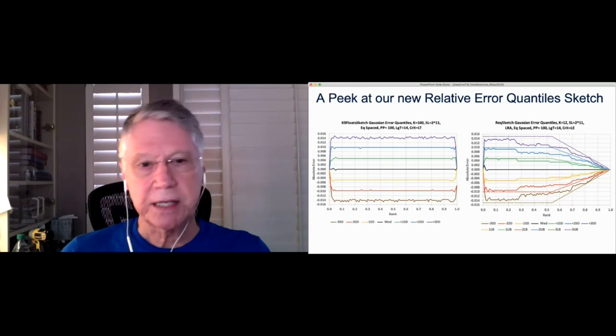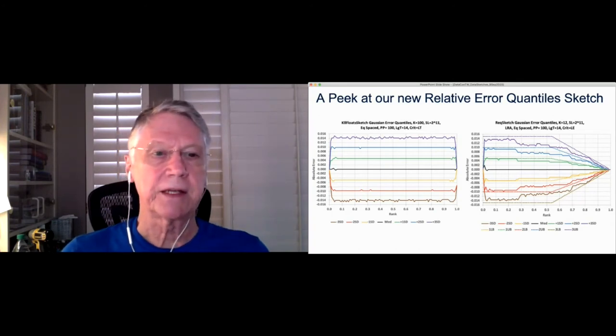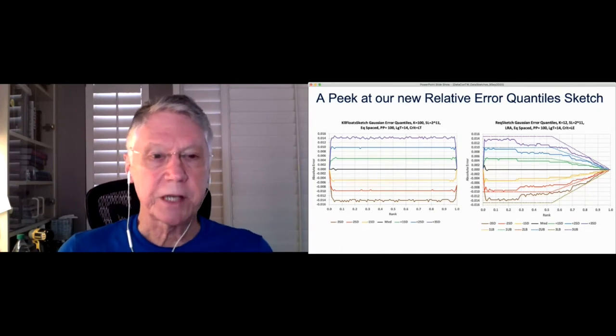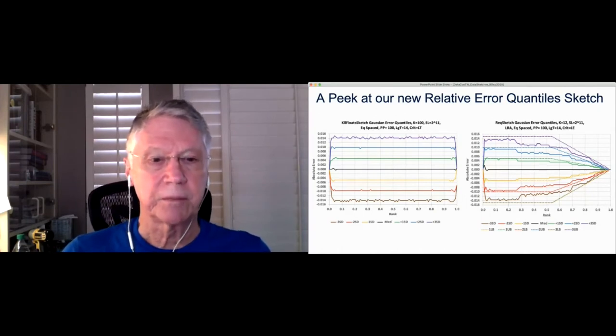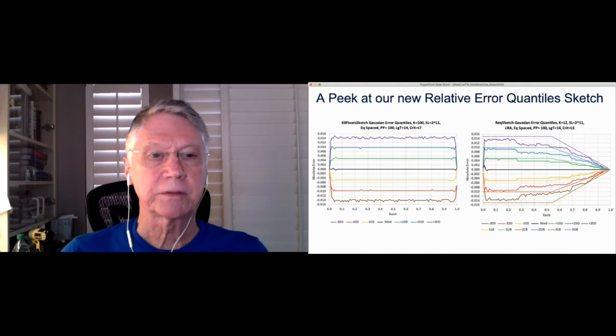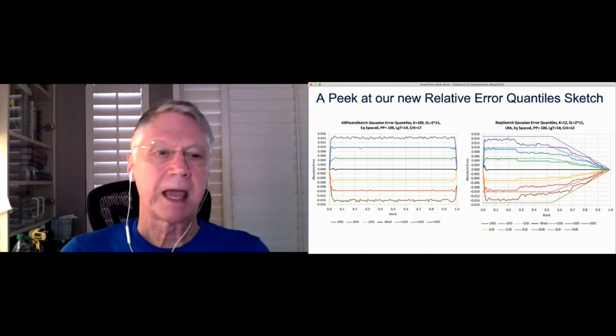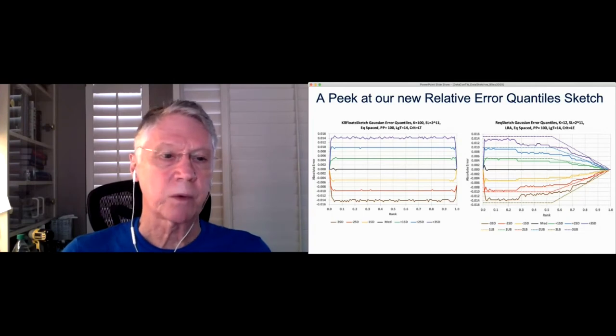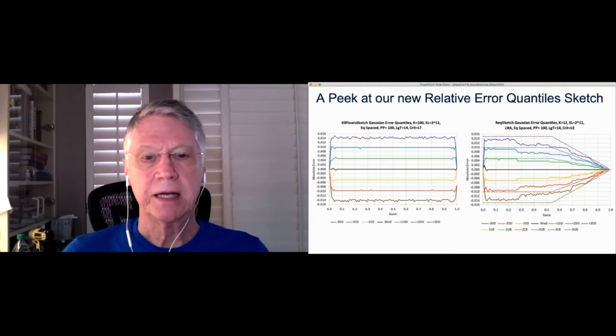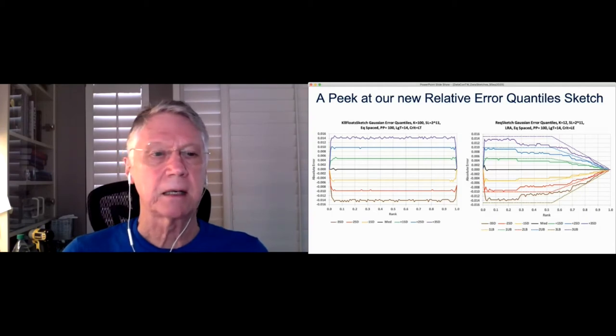And you see it's pretty flat. So these represent standard deviations in the error distribution. So between the red curve and the blue curve represents 95 percent confidence. And between the brown curve and the purple curve represents 99 percent confidence. And you can see it's flat over the range, over the range of ranks. So it doesn't matter whether you're asking for the 10th percentile or the 99th percentile. Basically, the rank error is about the same.